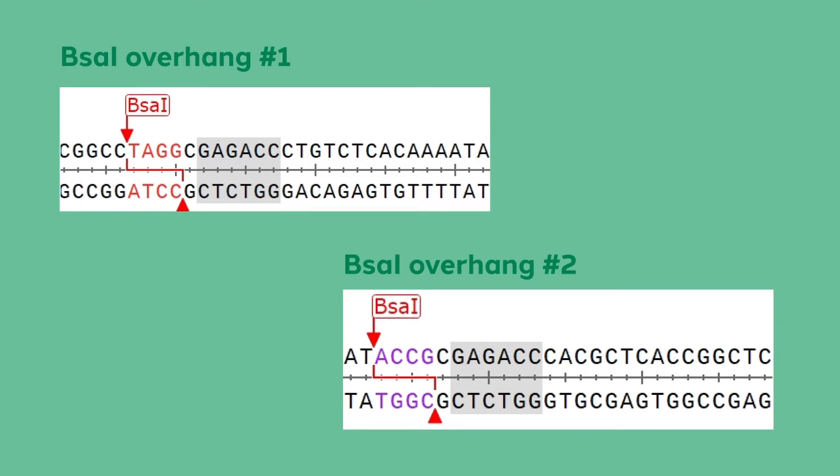In the case of a type 2S enzyme with a four base pair overhang, there are 256 possible overhangs associated with a single recognition site. Therefore, mere cleavage by a particular type 2S enzyme does not guarantee compatible ends. The only way to guarantee compatible ends is to design them into your cloning strategy.